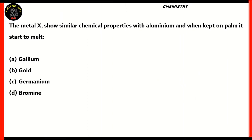The next question: metal X shows similar chemical properties with aluminum, and when kept on the palm, it starts to melt. From here we can take out some clues. The first clue is that it is a metal. The second clue is that when kept on the palm it starts to melt, which basically means it has a low melting point — lower than the temperature of a human hand.